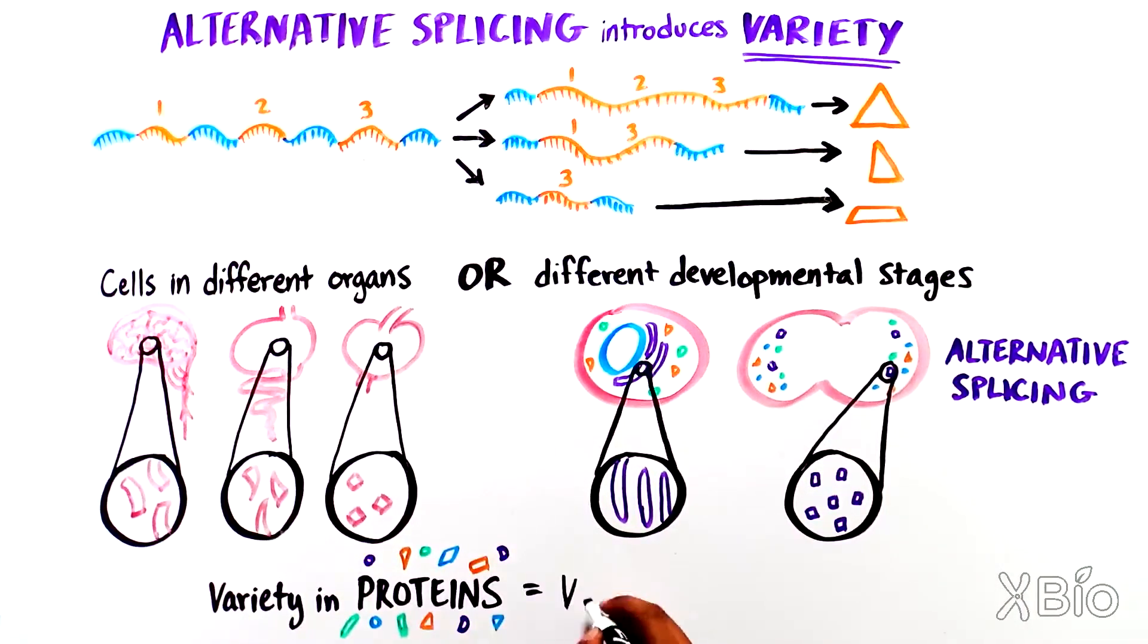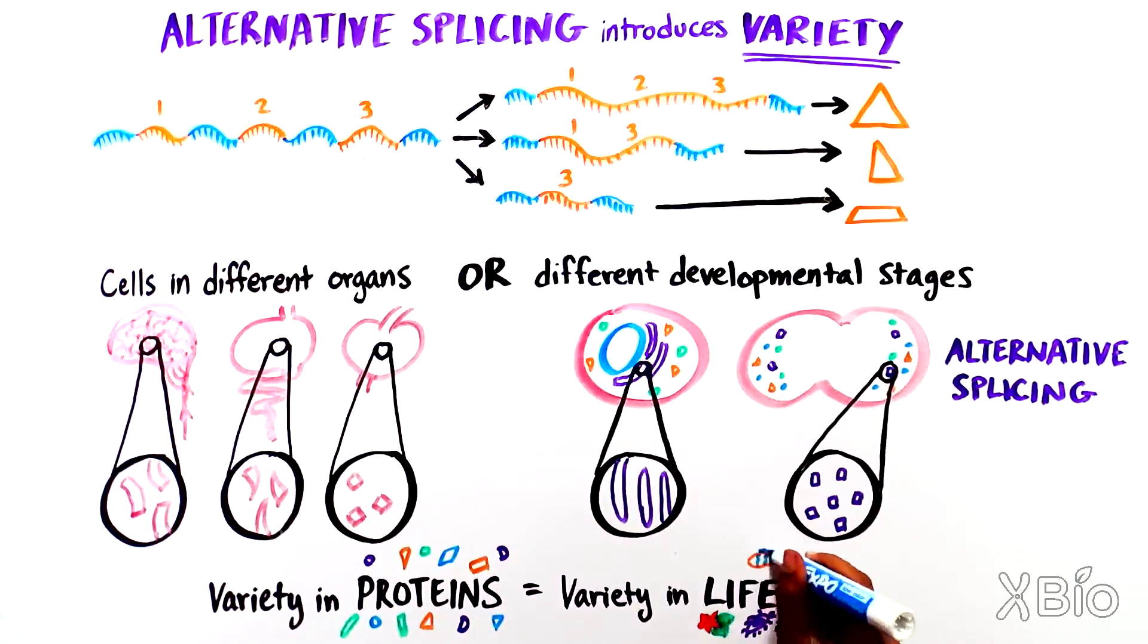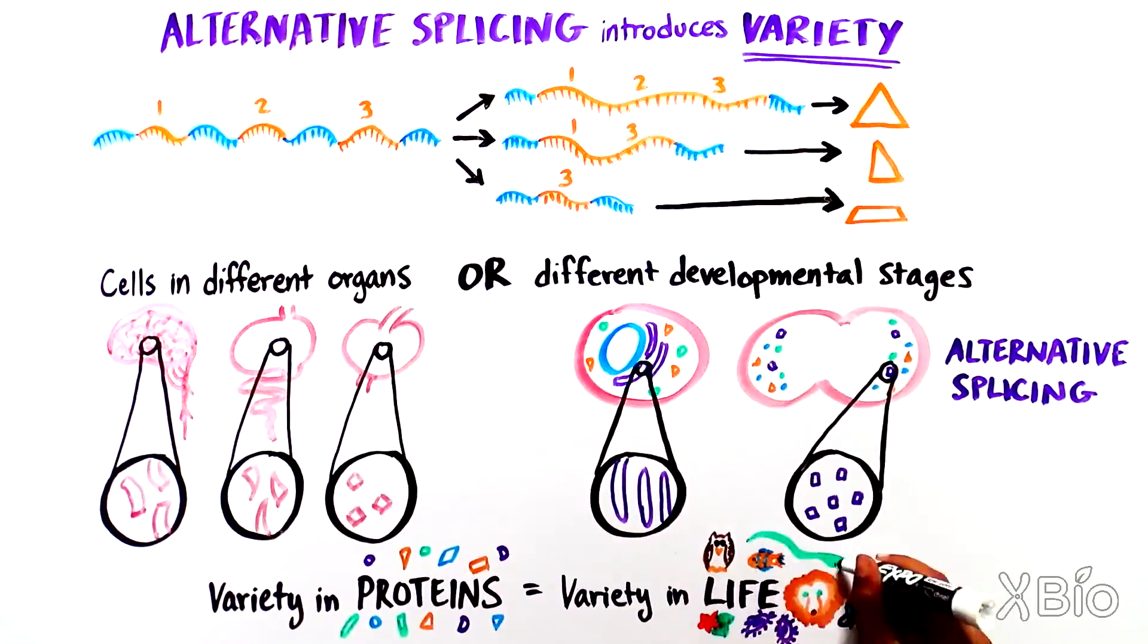Overall, splicing is an extremely important process. Because of it, we can produce the many varieties of proteins that contribute to the rich complexity of life.